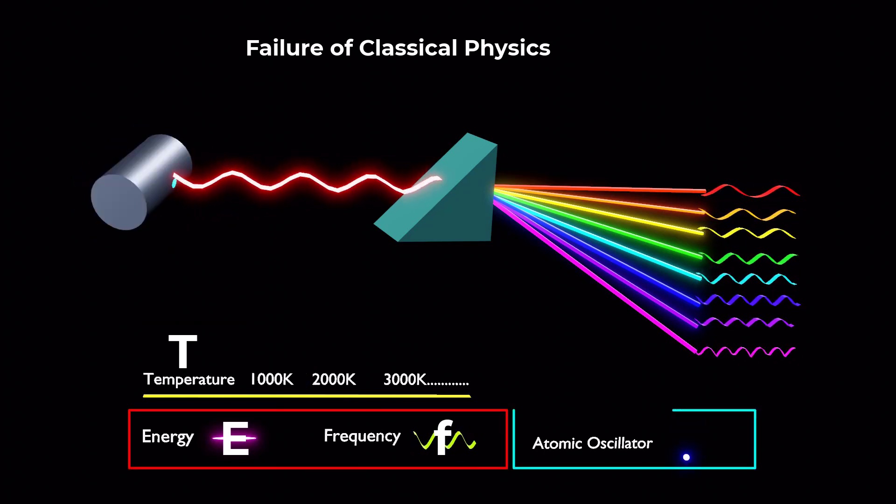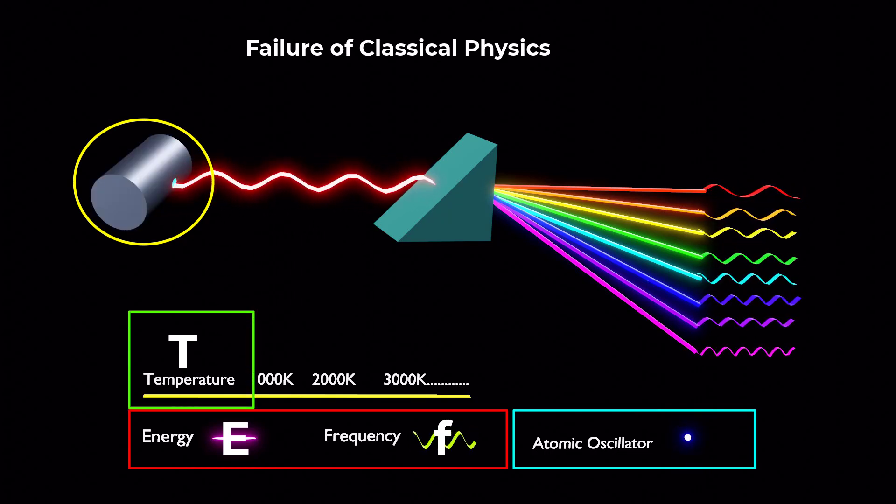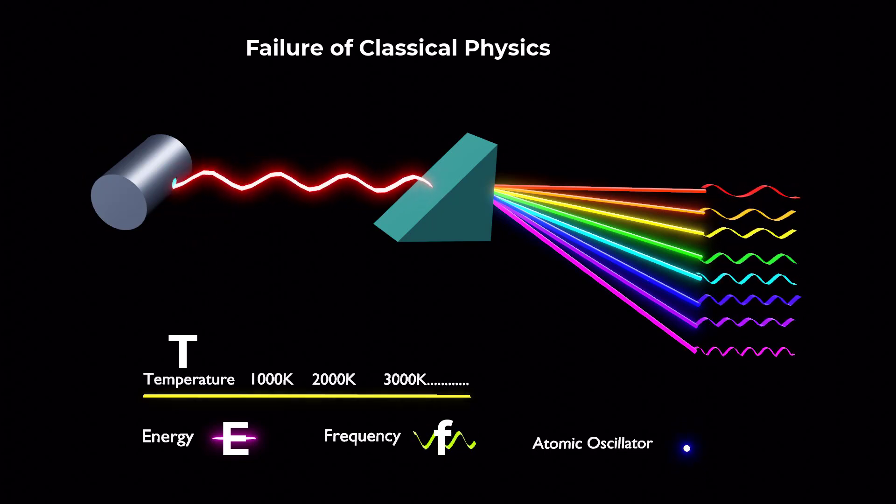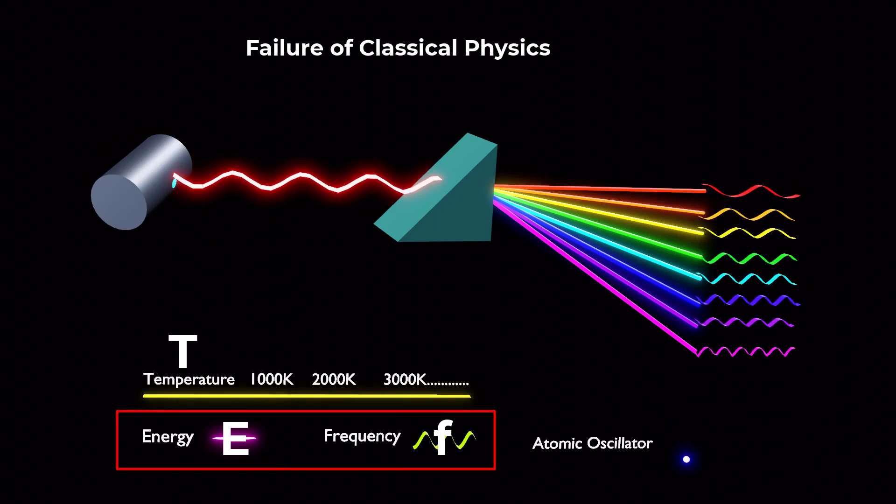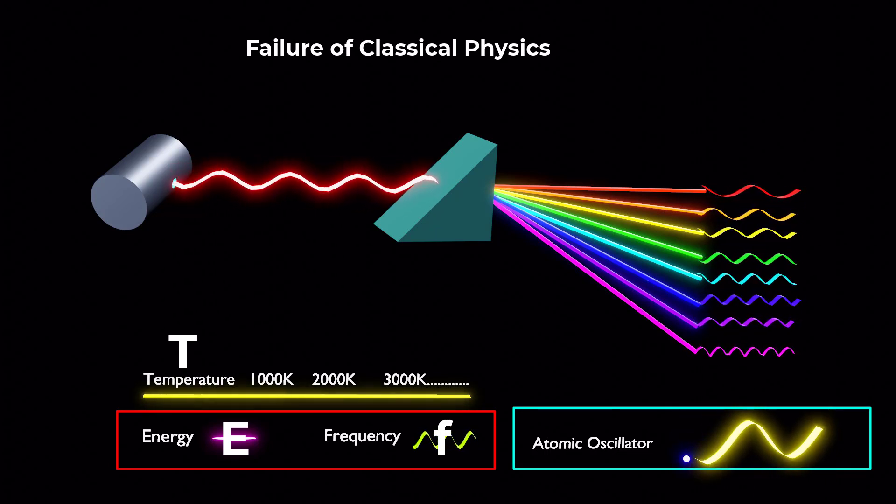Energy and frequency of the oscillators within the walls of a black body depend primarily on the temperature of the black body. In classical physics, it was believed that the energy and frequency of these oscillators were continuous and could change smoothly with temperature.